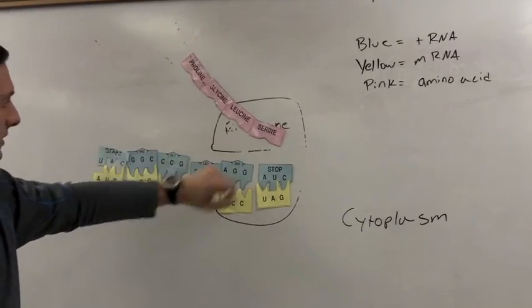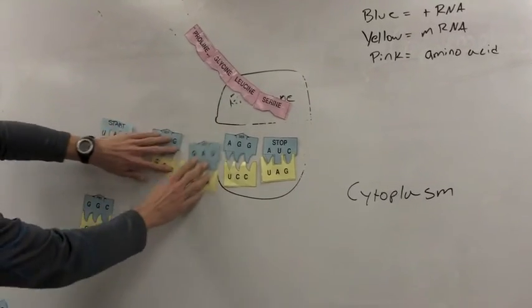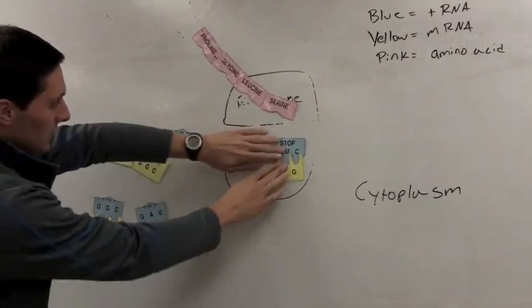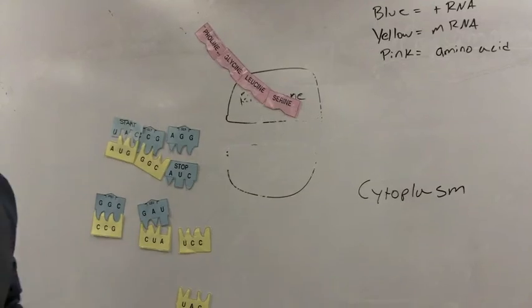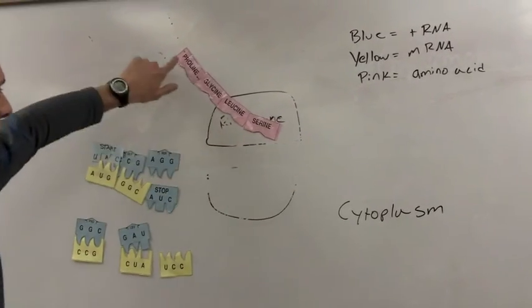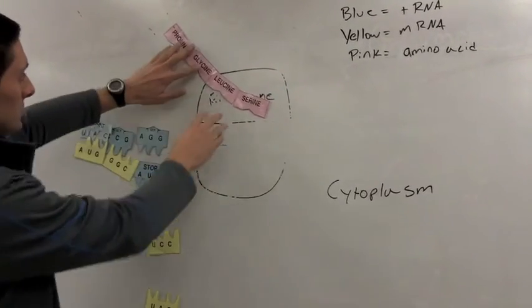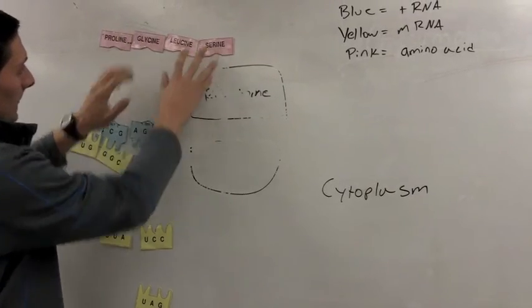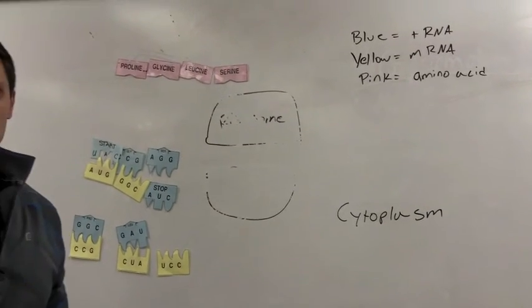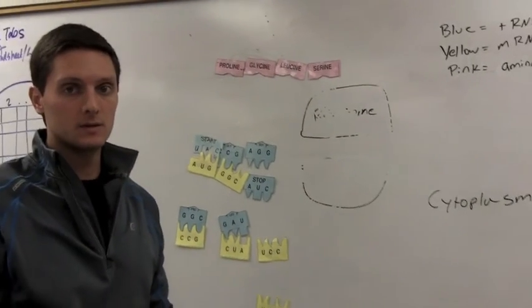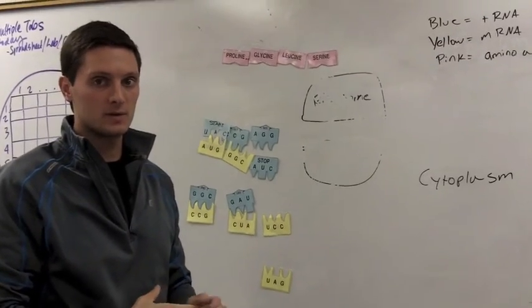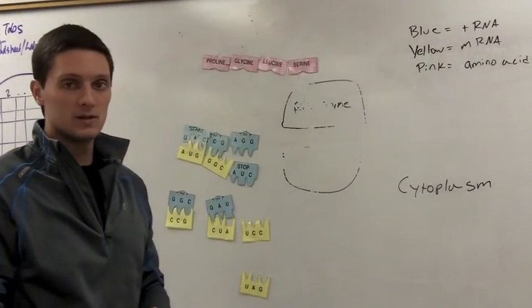And so then we have this chain of amino acids. The transfer RNA and tRNA molecules go back into the cytoplasm, and they're reused by the cell. But we have this chain of amino acids. It leaves the ribosome, and it gets folded into its correct shape, and then it goes and does whatever it needs to in the cell. And that is transcription and translation and the formation of a protein.